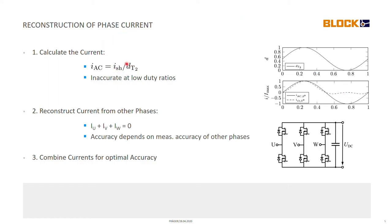So we can either use this current or this current or we could find some other solution. And there is a crossover point, which is around here where we move from the direct reconstruction, which would be this calculation here, towards the reconstruction from the other two phases where this brings us the better results. And this is the third step of the reconstruction algorithm. We combine those currents for an optimal accuracy and then we are pretty much done and have our currents back.